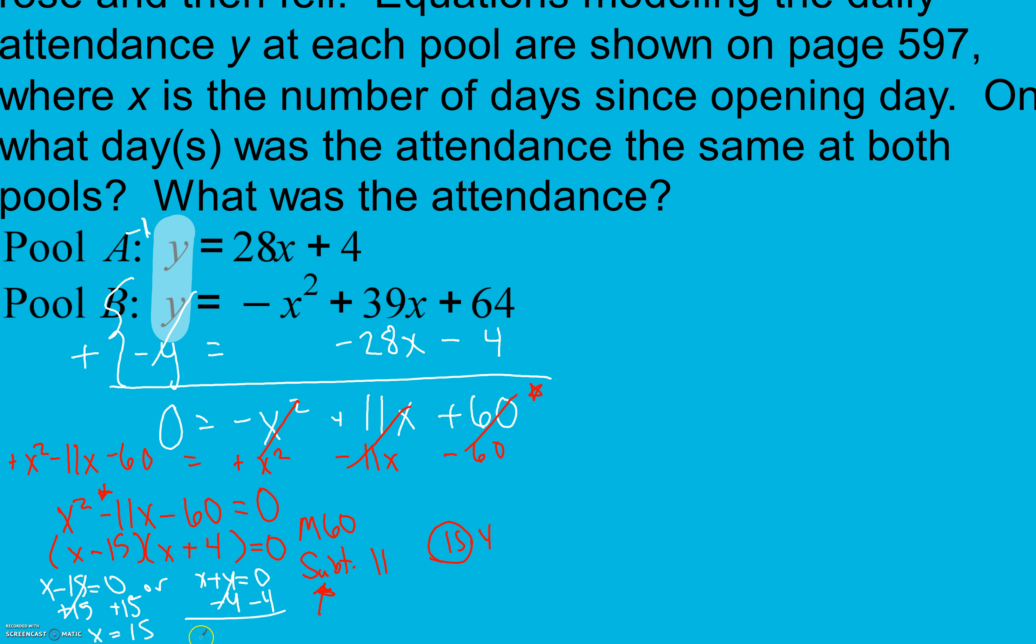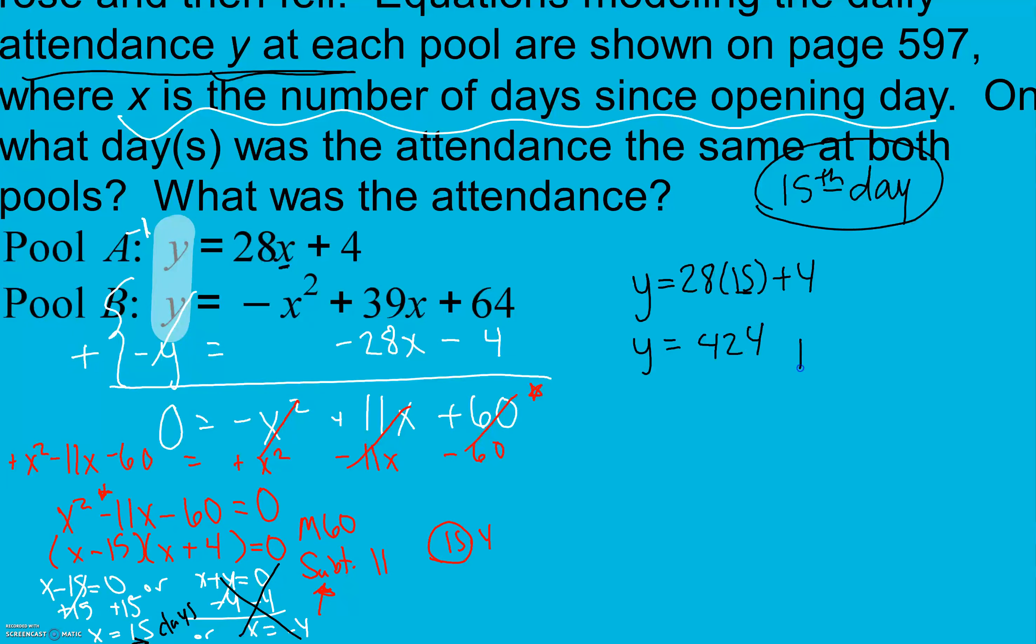And X is going to be 15, or X is going to be negative 4. Keep in mind, though, that our X is our number of days since opening day. So can X be negative 4? No. X can be 15 days, though. So, on what days was the attendance the same day? The 15th day, or day 15. Now, what was the attendance? We want to know what is Y is our attendance. So we take our X value of 15, and we substitute it into either equation in order to find Y. So Y equals 28 times 15 plus 4, for example. Again, I know what X is, so I substitute it in for X in my equation. Here, I get 424. So 424 people went to the pool that day.